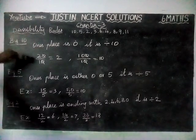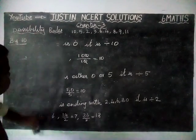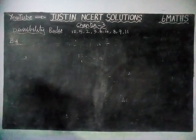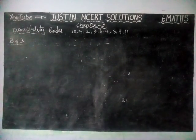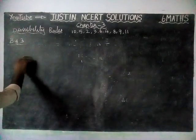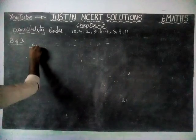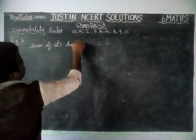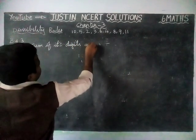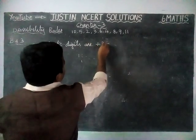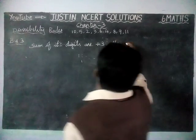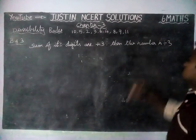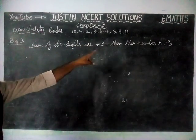Now, we are going to check for divisibility by 3. If the sum of its digits is divisible by 3, then that number is divisible by 3.